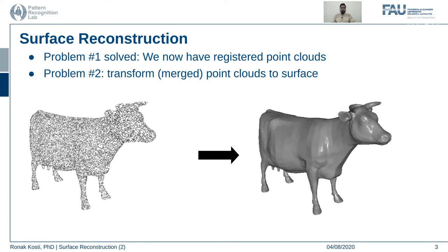The first problem of surface reconstruction — having a nicely registered point cloud — was solved. The second problem we focus on now is to convert this point cloud into a surface. An example is shown here where on the left hand side you have a well-registered point cloud of an animal, and on the right hand side a surface reconstruction from those points.